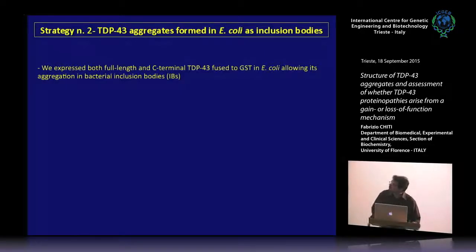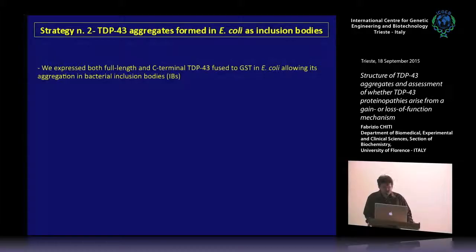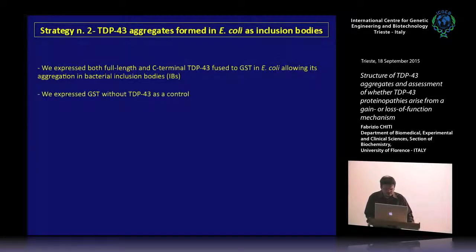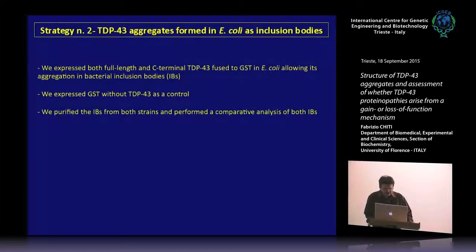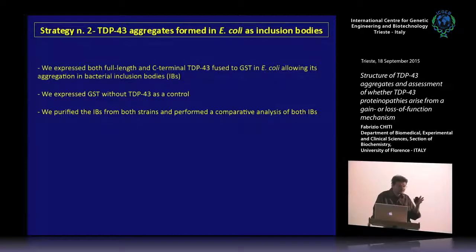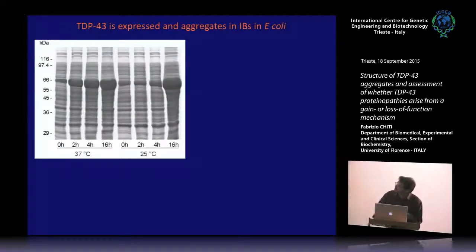For strategy number two, we expressed both full-length and C-terminal fragments of TDP43 fused to GST in E. coli. TDP43 is very insoluble and so it ended up in the inclusion bodies, which we could study directly. We also expressed GST without TDP43 as a control and purified the inclusion bodies from both strains to compare TDP43-containing inclusion bodies with control inclusion bodies.